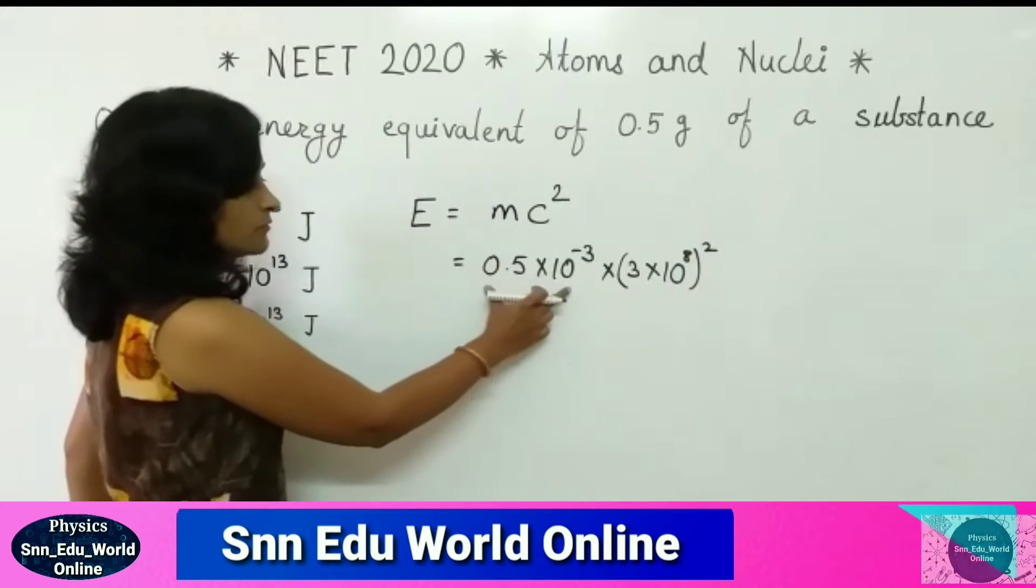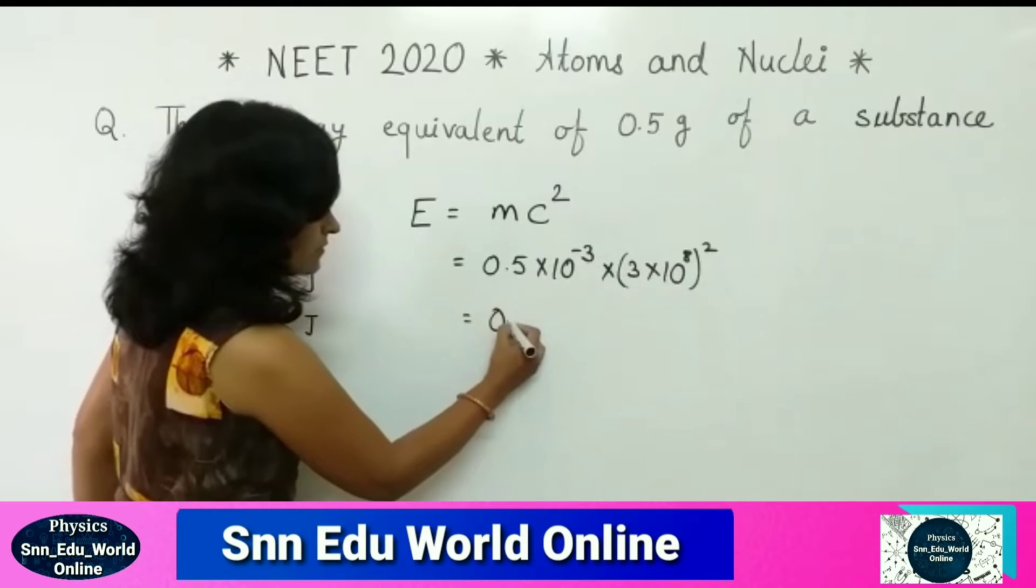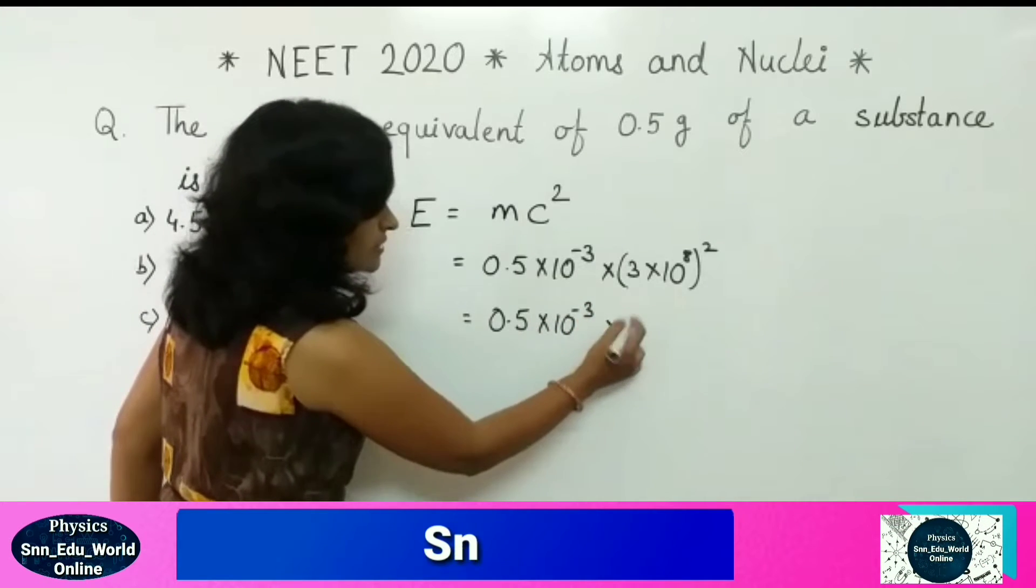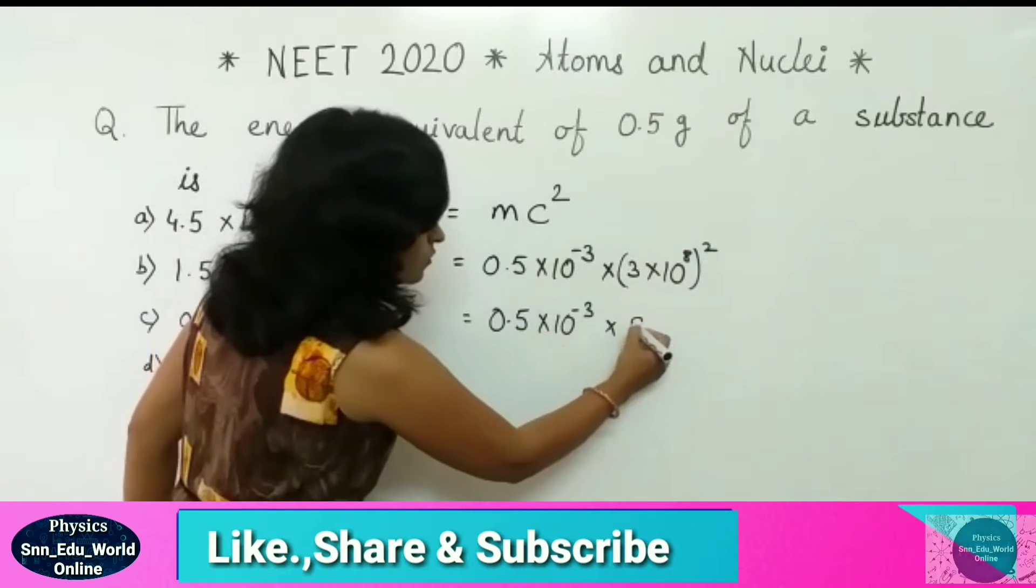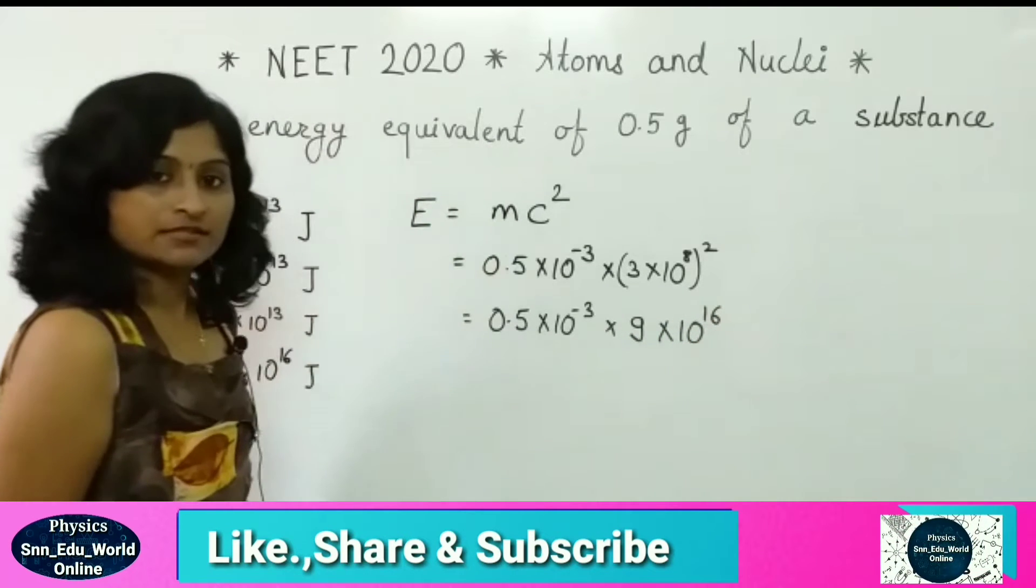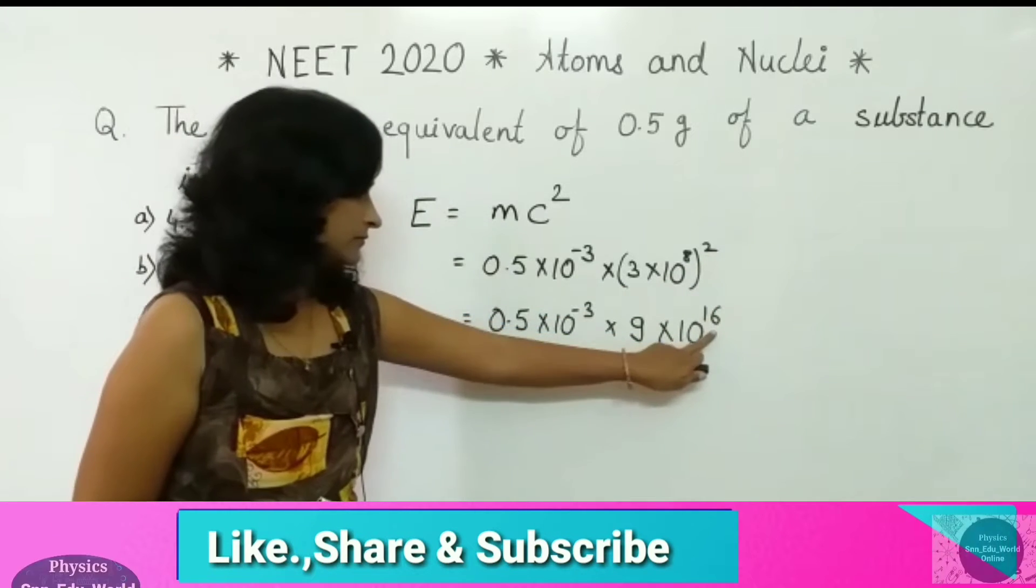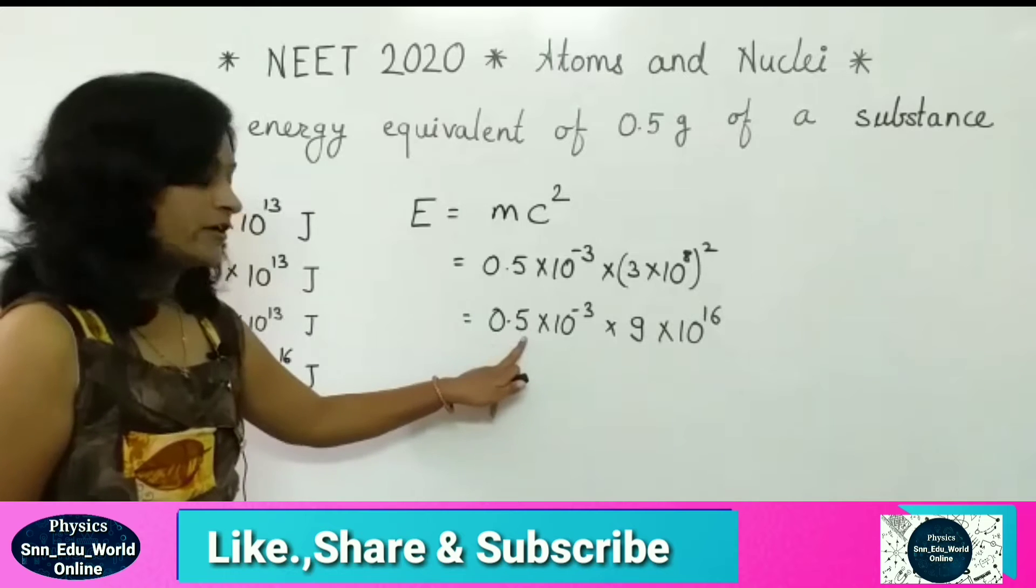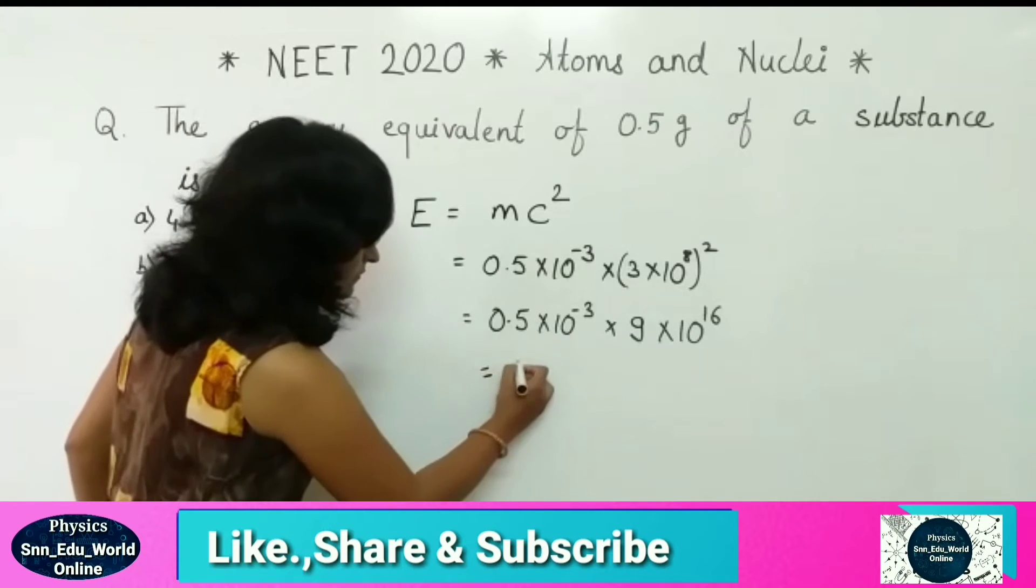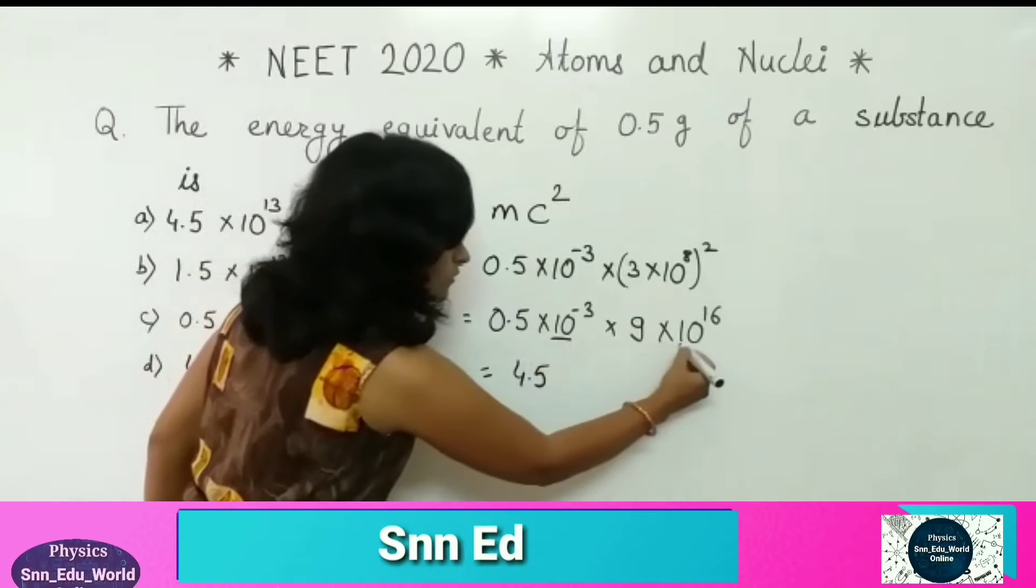E is equal to m into c square. Solve this. 0.5 into 10 raised to minus 3 and the square of this will give you 9 into 10 raised to 16. So power's power will get multiplied, 10 raised to 16. 9 into 0.5 means it is 4.5, half of the 9.